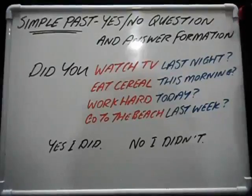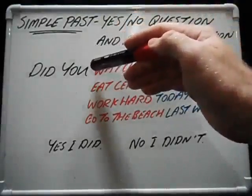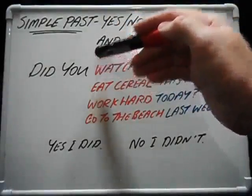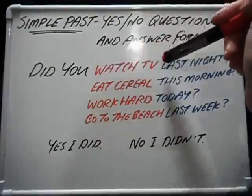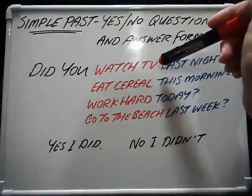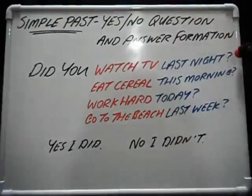How to form a simple past yes-no question? First of all, we need 'Did you,' followed by an action — for example, 'watch TV' — followed by a time — for example, 'last night.'